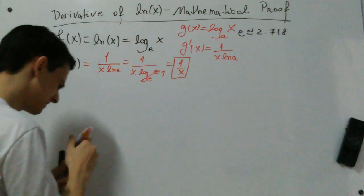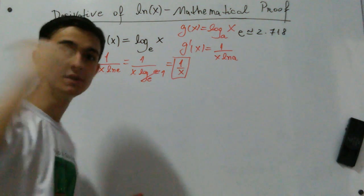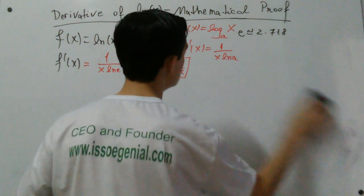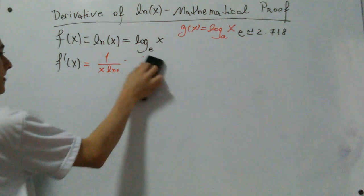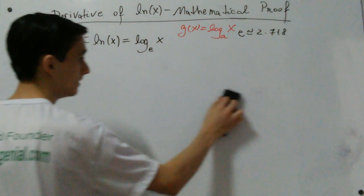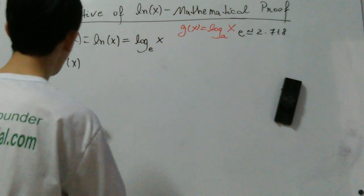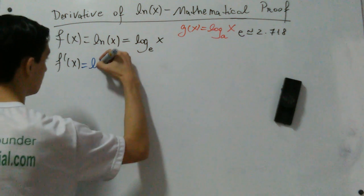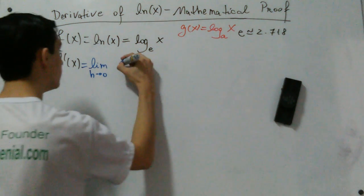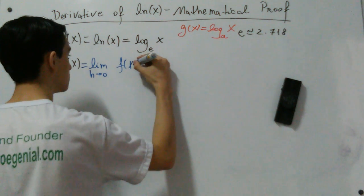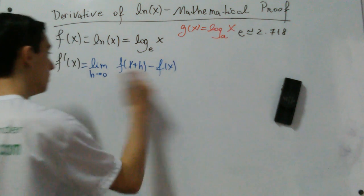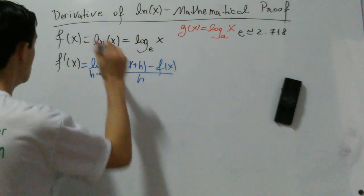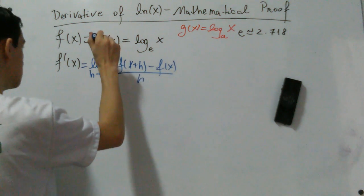But that way of proving is quite simple — it's just using an equation we deduced in previous videos. So let's deduce this derivative in another way, using the definition of derivatives, the limit definition of derivatives. We know that if we have a function f of x, and we're going to apply this definition to the natural log of x.